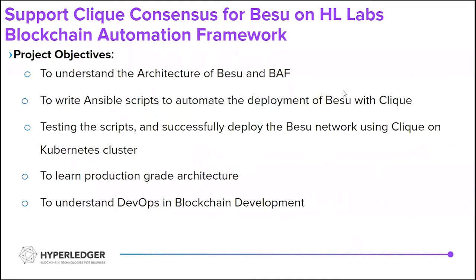The project objectives were to understand the architecture of Besu and BAF, and to write Ansible scripts to automate the task of deploying a Besu network with QBFT consensus, and also to successfully deploy the Besu network using QBFT on a Kubernetes cluster, and to learn more about the production grade architecture of BAF and Besu, and to understand DevOps and QBFT in blockchain development.